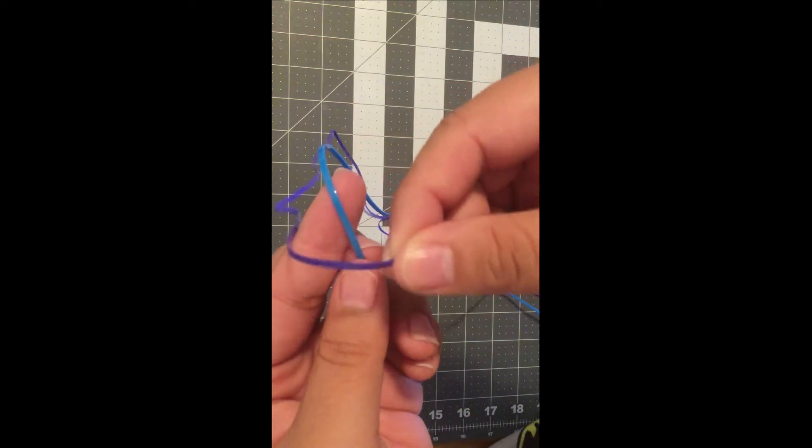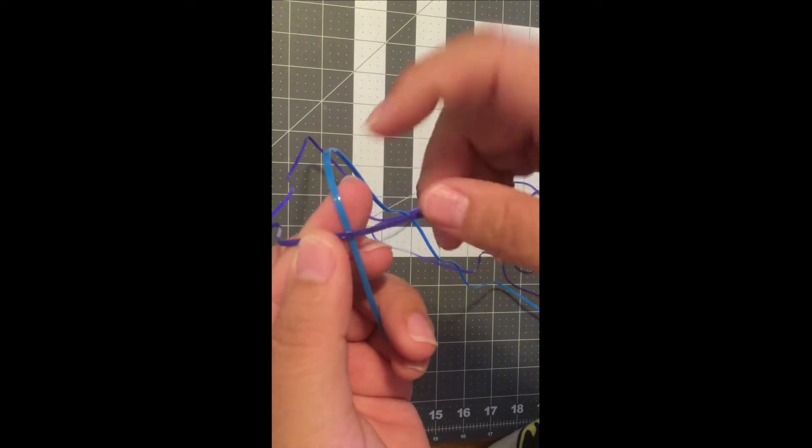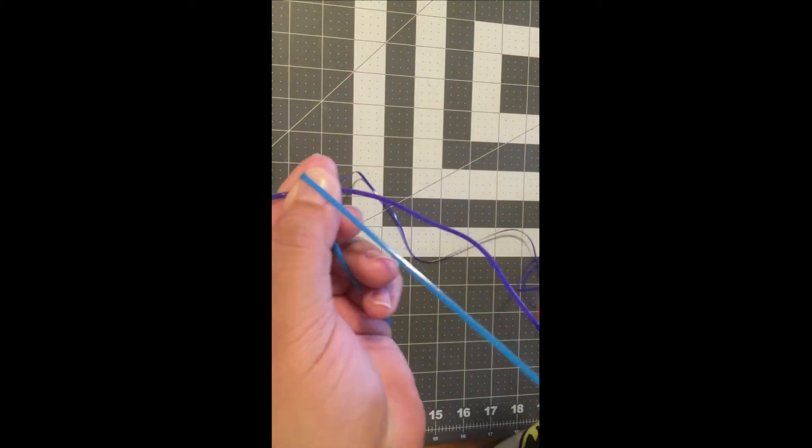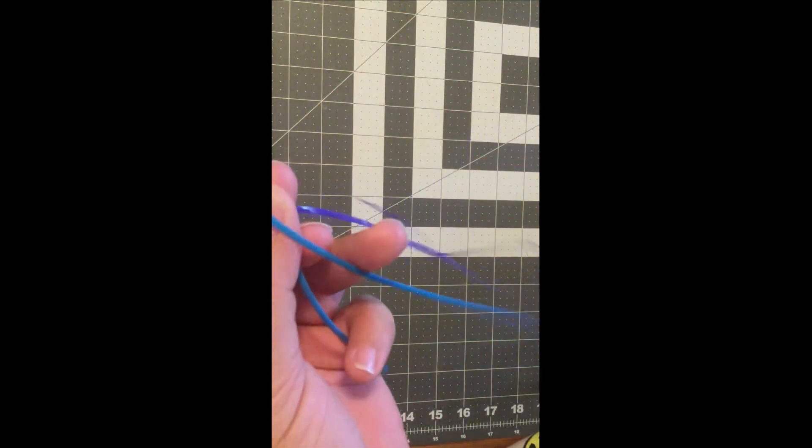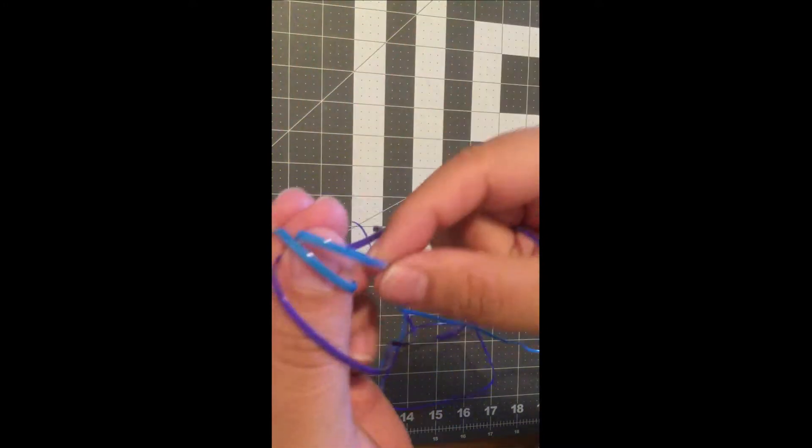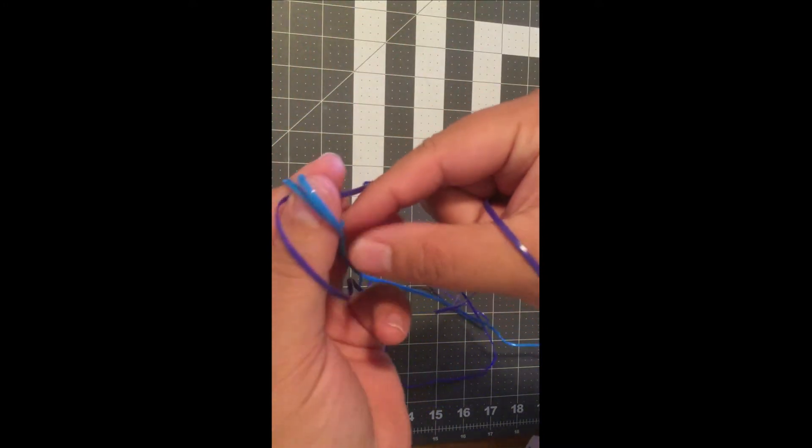Place your thumb over the X and we are going to take the color that is going up and down, for me that's blue, and loop it over our thumb. Once that's done we can open our loops a little to make things easier.